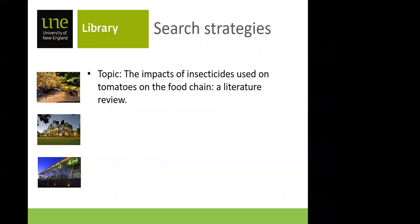Here's an example topic: 'The impacts of insecticides used on tomatoes on the food chain.' Straight away, the keywords are insecticides, tomatoes, and food chain — those are what you're going to be looking at. There's also a limiting word: impacts. You want to find the impact of insecticides used on tomatoes on the food chain. So you'll be looking for insecticides, tomatoes, food chain, and using 'impacts' to narrow and define your search.